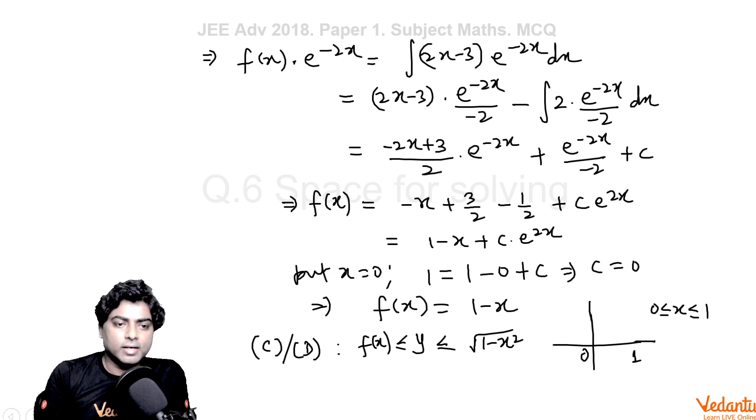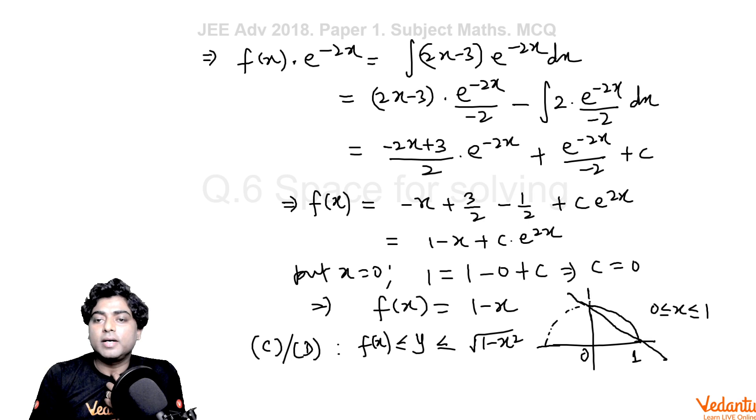This is a semicircle from 0 to 1 we have to take, and y = 1 - x is passing through the point (0, 1) and (1, 0). So y is more than f(x), y is more than 1 - x, above this line and inside the quarter circle.